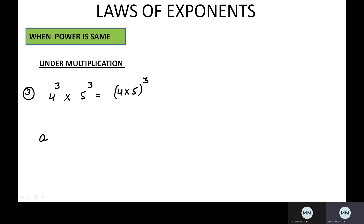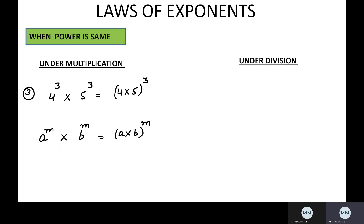In general, if you have different bases — first exponential term a raised to the power m and second term b raised to the power m — but the powers are the same, how can you write the answer? Multiply the bases and write down the power: a^m × b^m = (a×b)^m. This is the third rule.